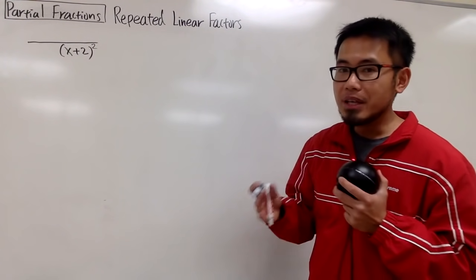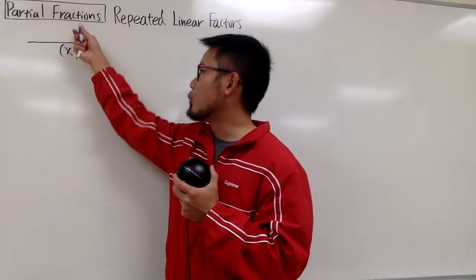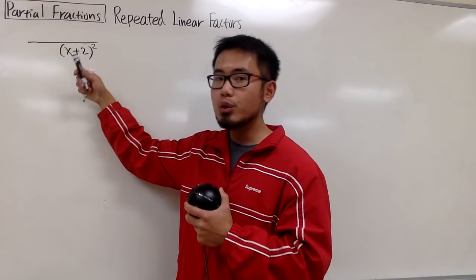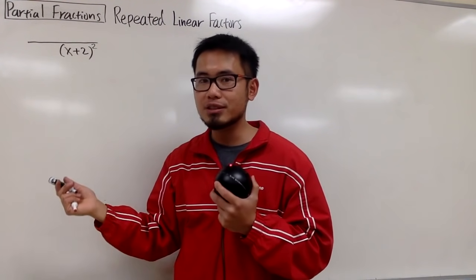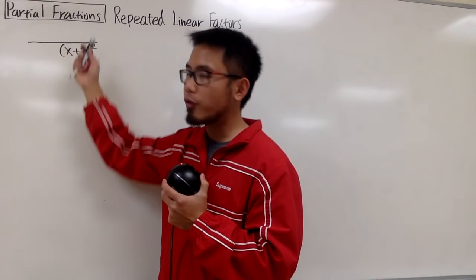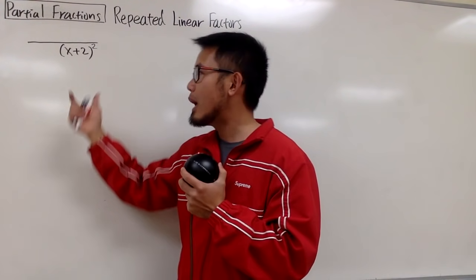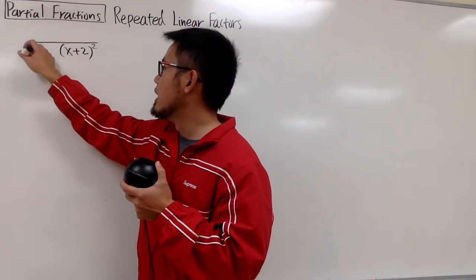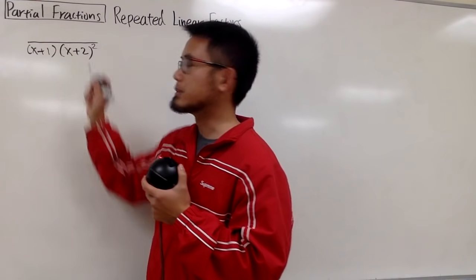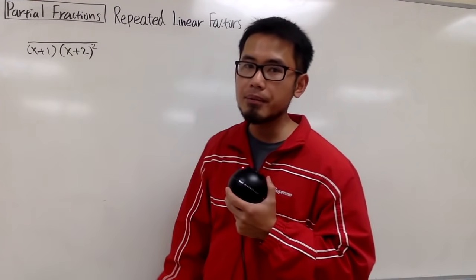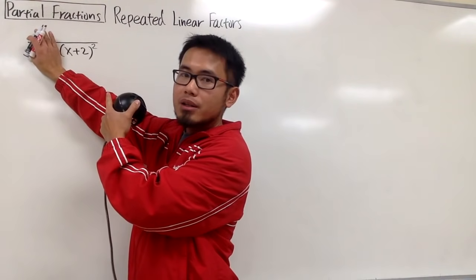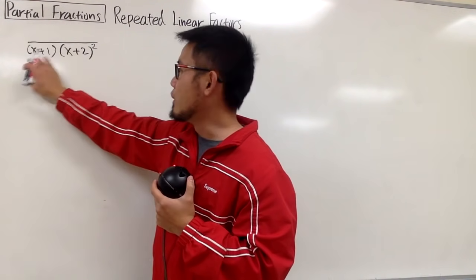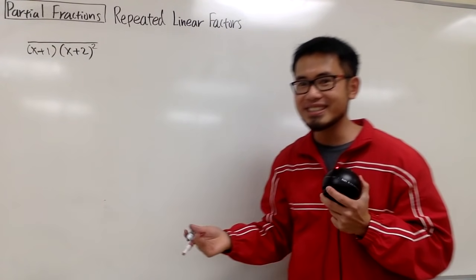However, if you are doing integration — let's say 1 over (x+2) squared — you don't have to do any partial fraction business. When we say let's do partial fractions, it's because we have this factor along with something else, like (x+1) to the first power. If you only have one factor, you can integrate directly. But if you have both, you have to break them apart.